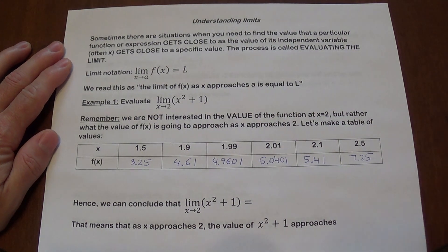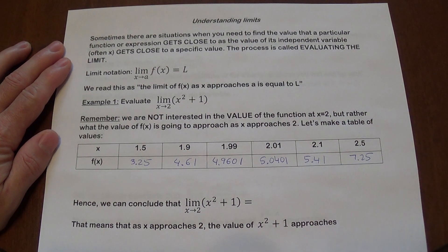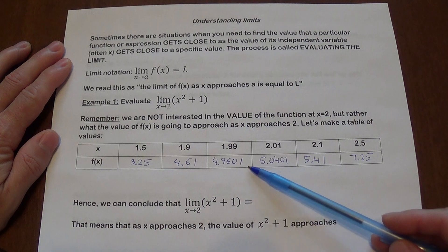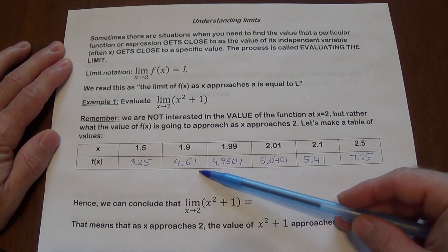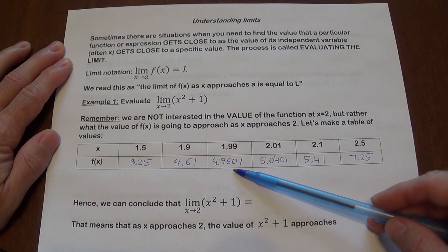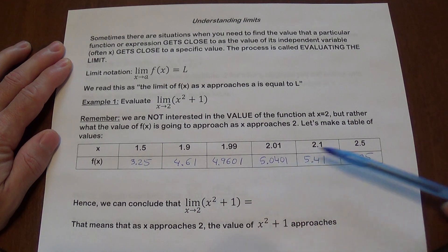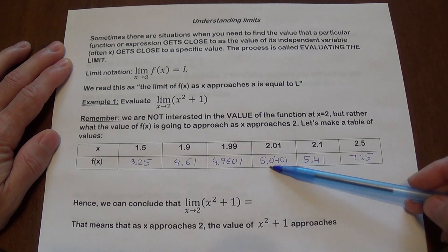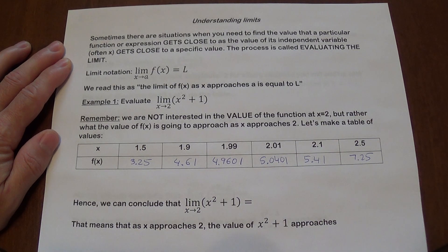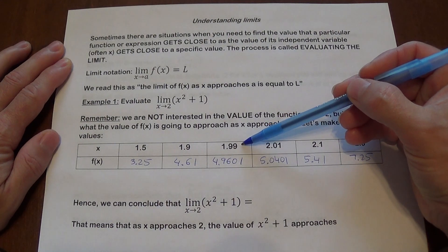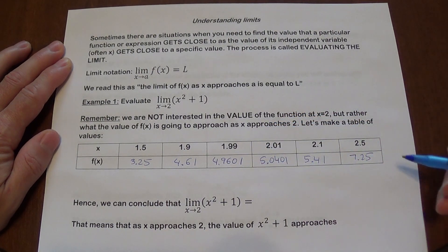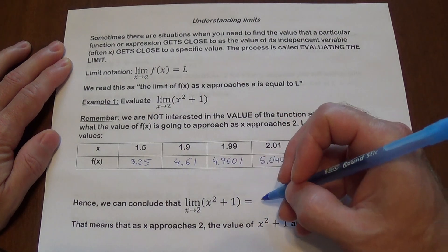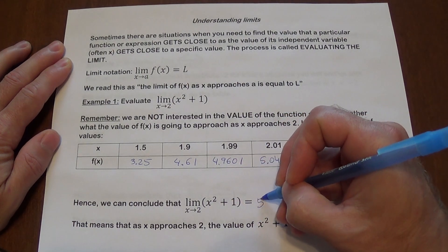So what I want you to notice here is what value do you think we're getting close to when we try to approach 2, which is somewhere here. You see here the numbers are gradually going up, going towards a certain number, and here the numbers are gradually going down, heading towards a certain number, and that value is actually going to be 5. You can continue making it closer and closer and you will see that the numbers from both sides will be getting closer to 5. So we can conclude that the limit is going to equal 5.